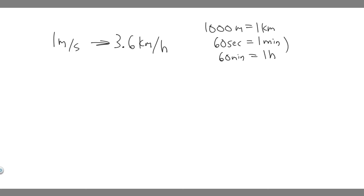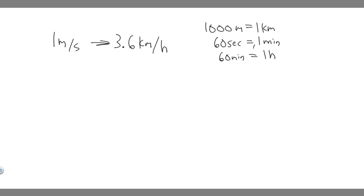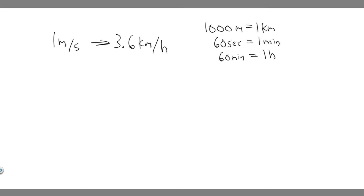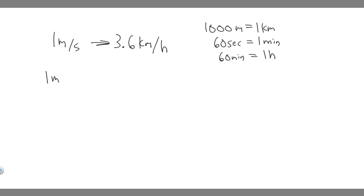These are the three conversions we'll use. Now let's show the steps. You want to write your initial value, which is 1 meter per second — written as meters over seconds.